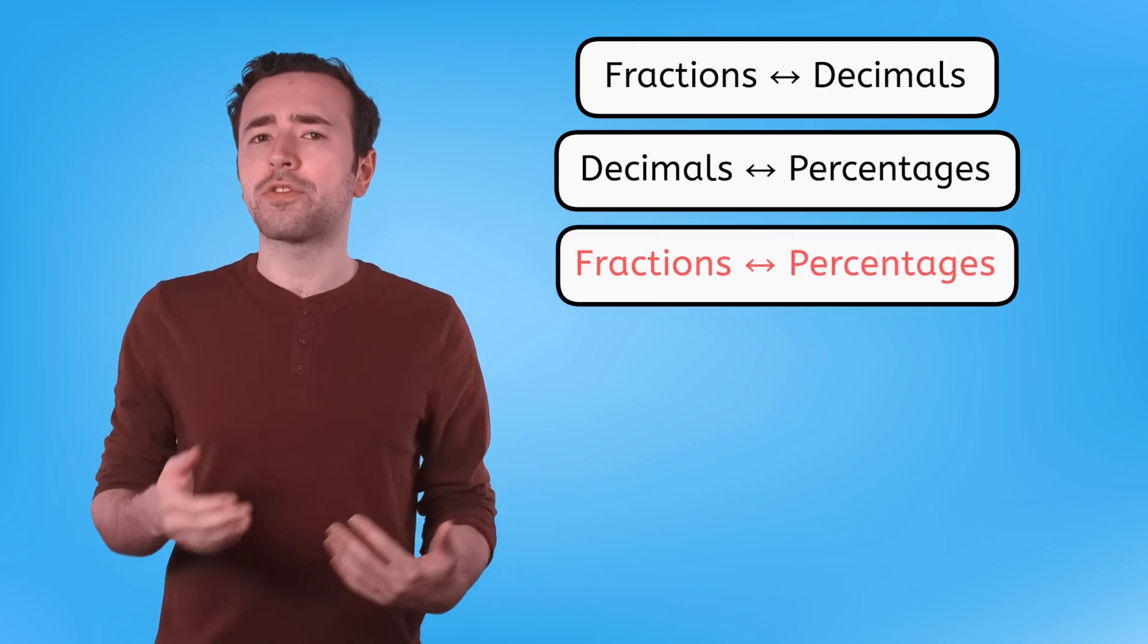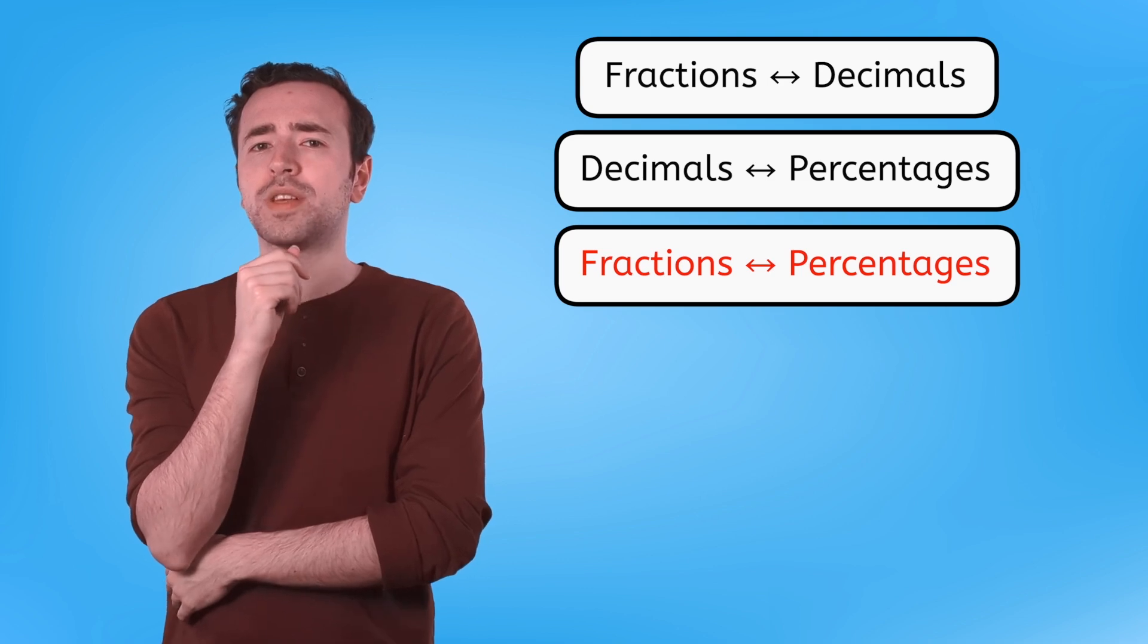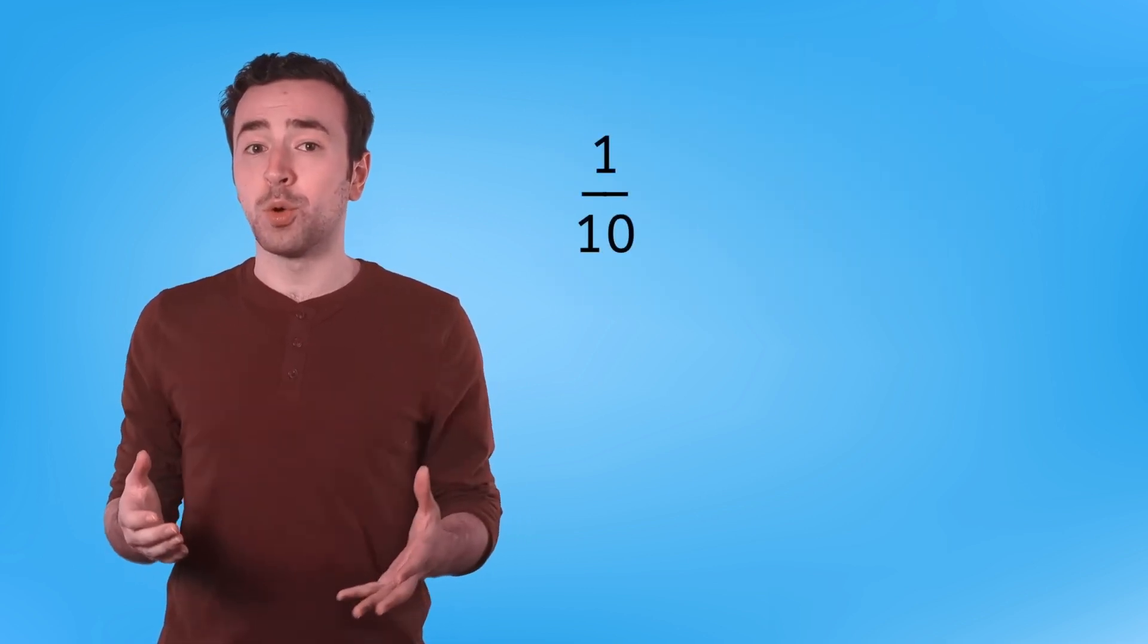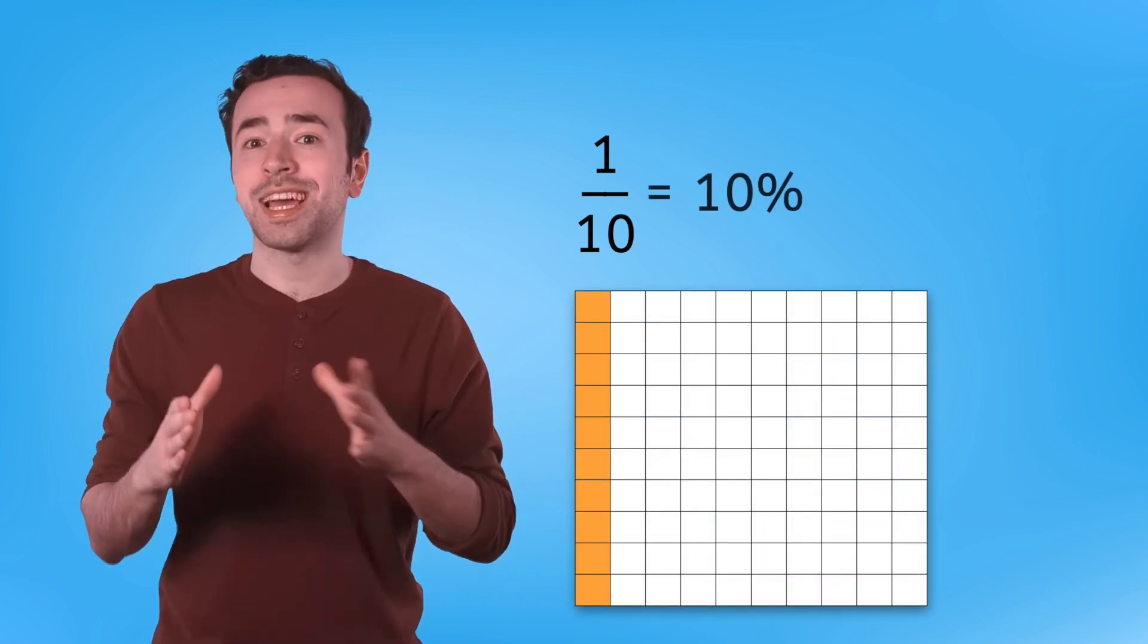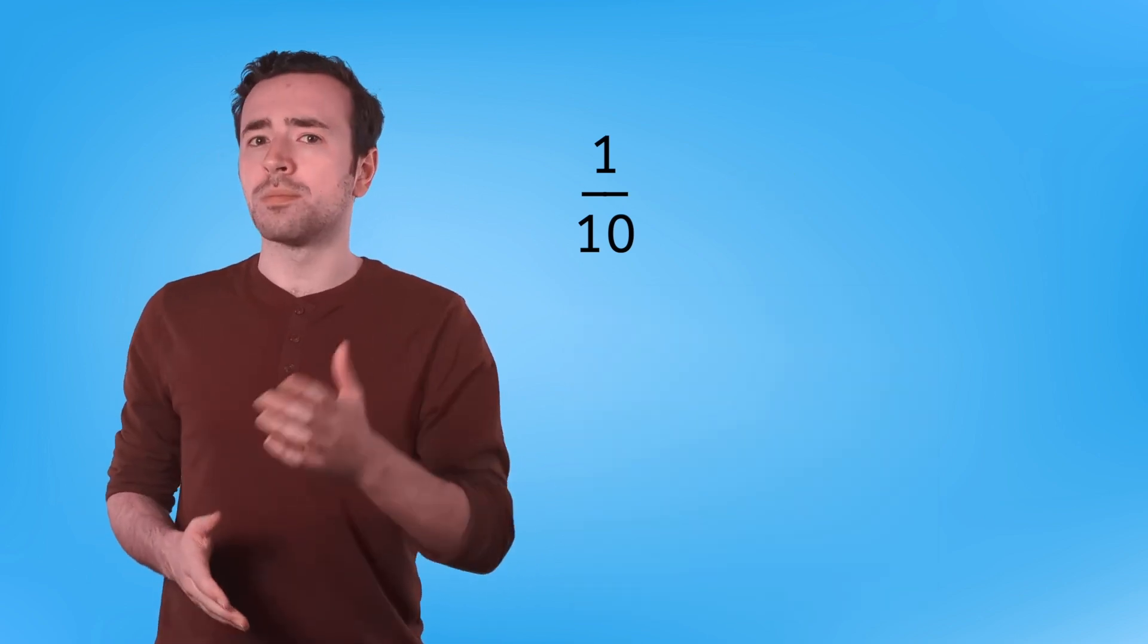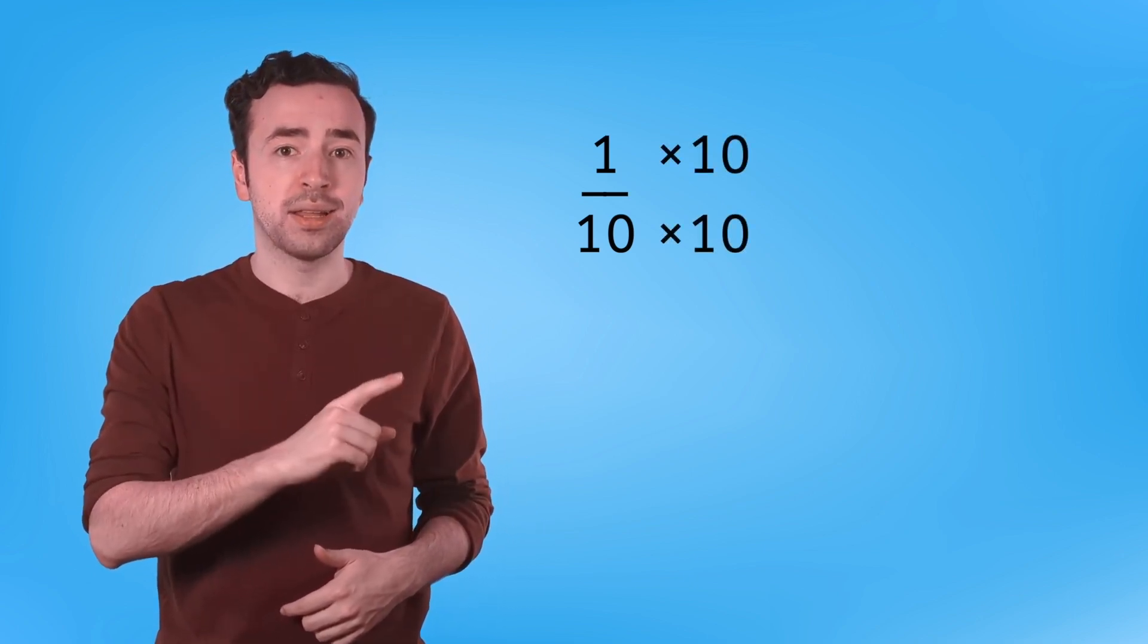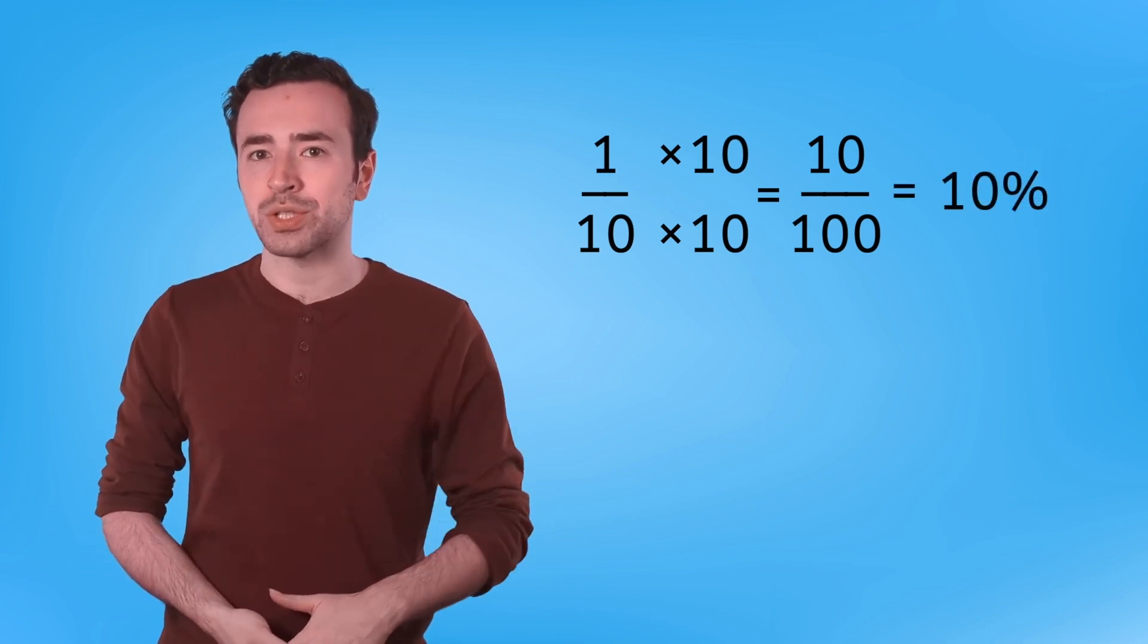As we learned previously, some fractions are less challenging to convert to percentages. For example, we can shade one-tenth of a hundred grid, which represents ten percent. Or we could multiply the numerator and denominator of one-tenth by ten, so that we get a fraction out of one hundred, which also represents ten percent.